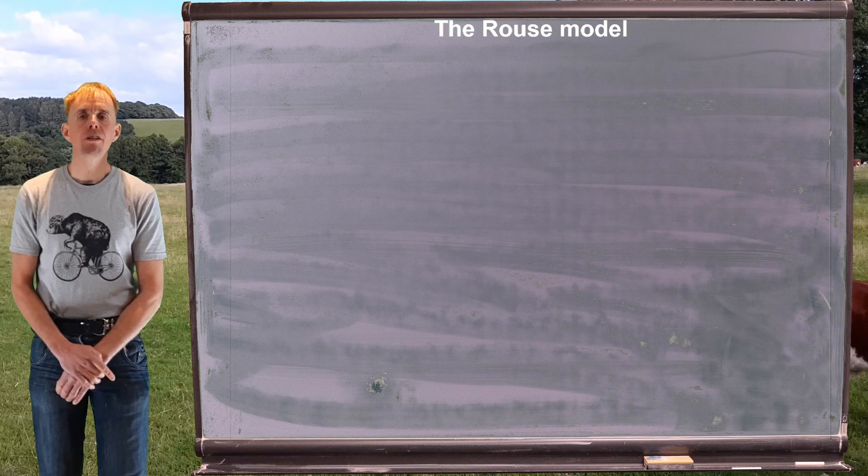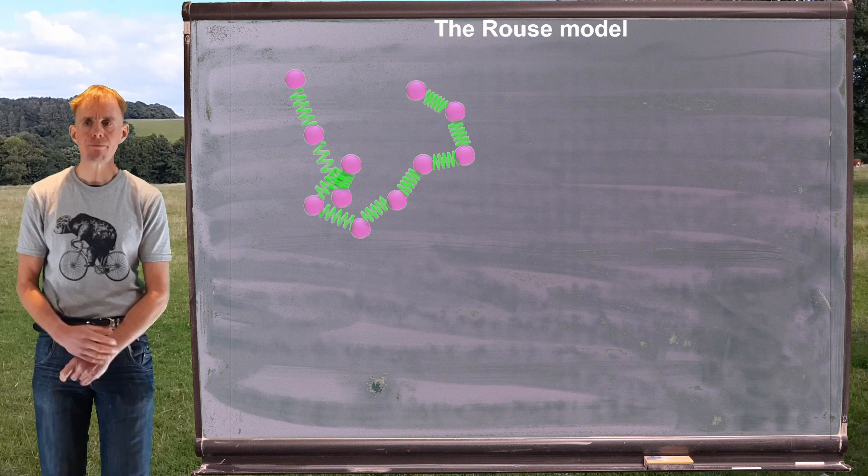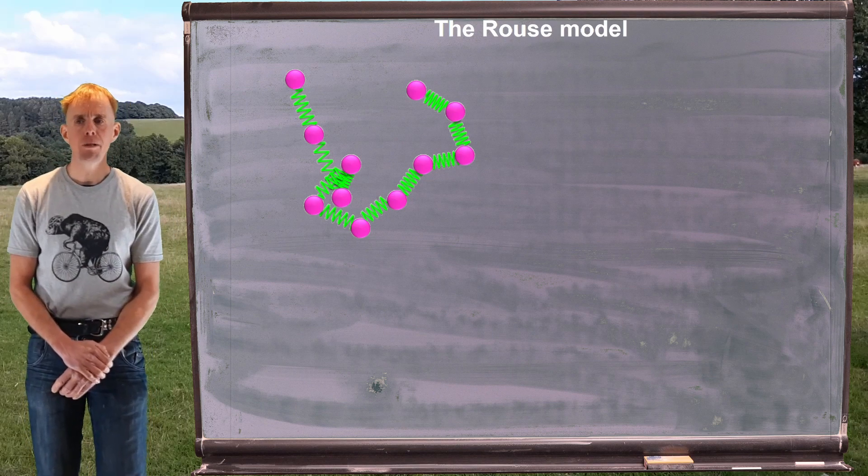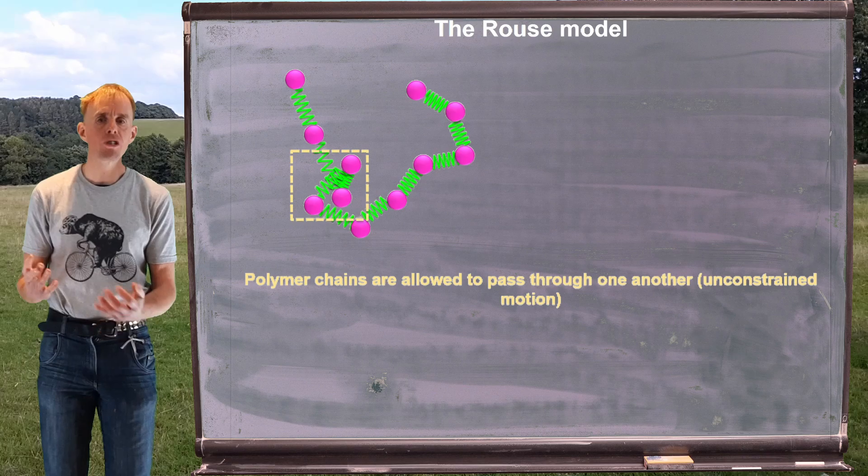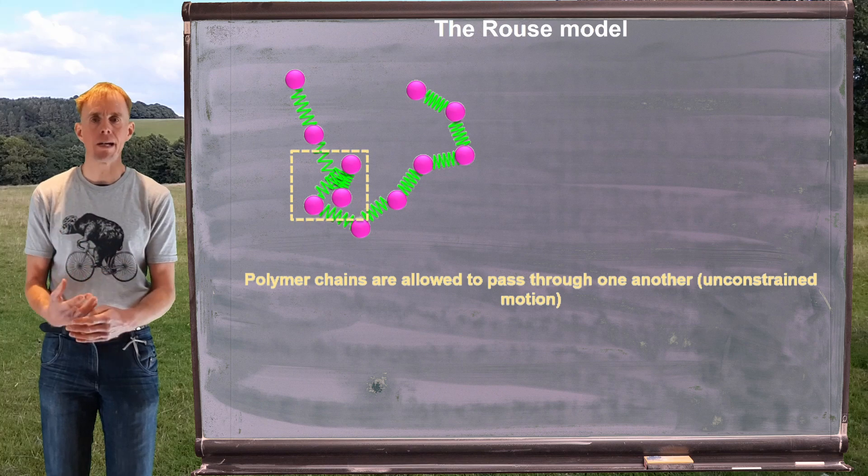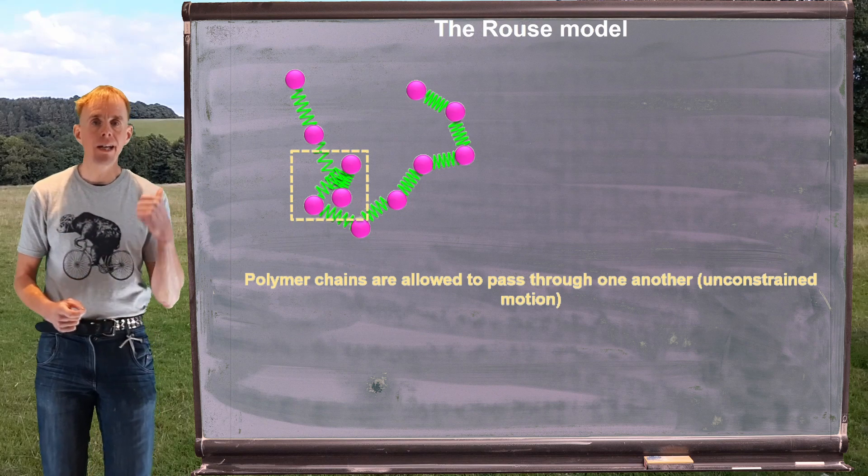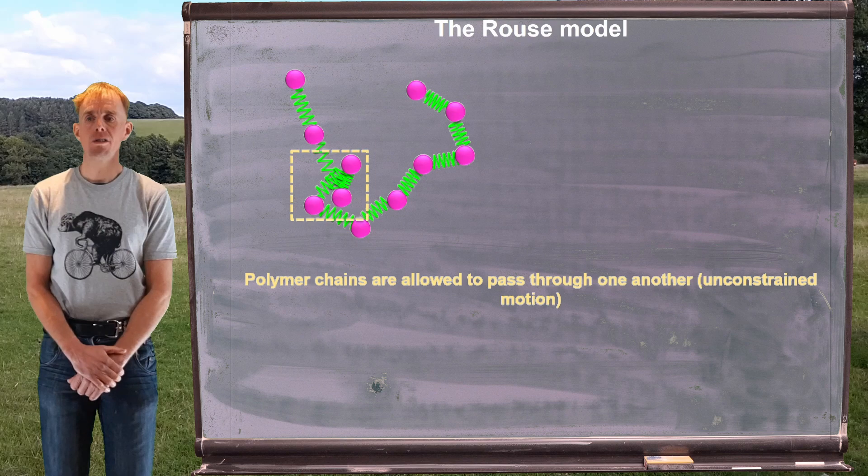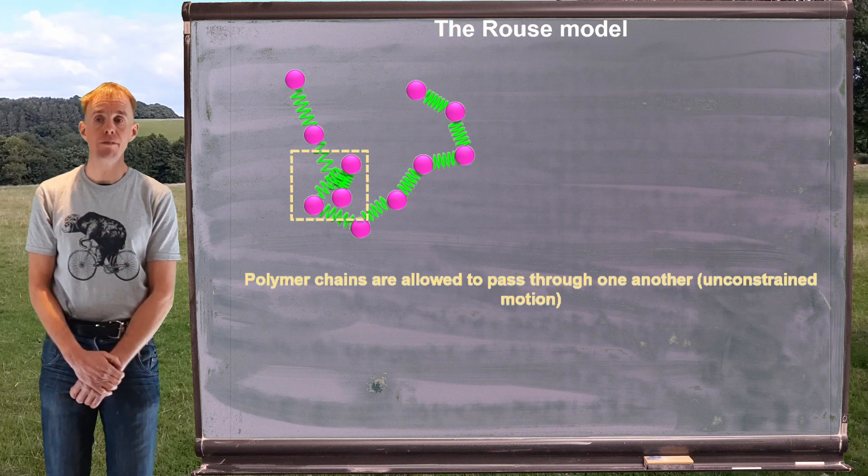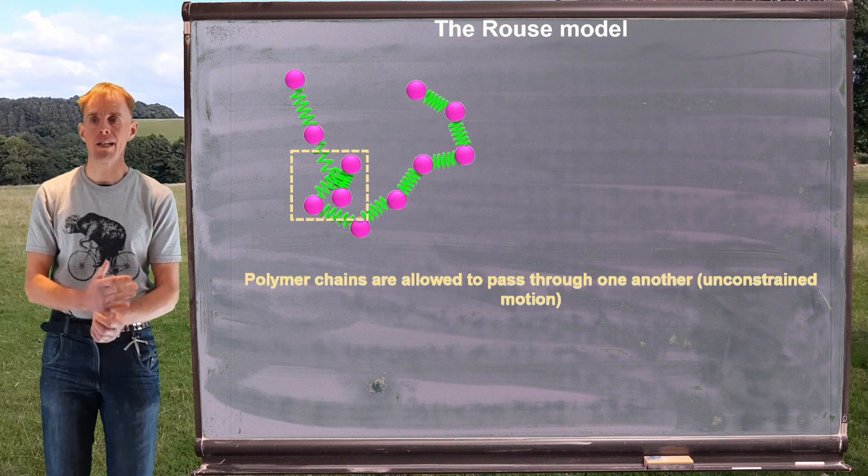So let's have a look at the first model that uses Gaussian chains, and this model is called the Rouse model. Let's examine what physics the Rouse model incorporates. The first piece of physics is one that says that polymer chains are allowed to pass through one another in an unconstrained manner. And this relates back to the concept of a Gaussian chain. Each segment can orient randomly compared to the segments around it. In the dotted box here on the board, you can see that I've got one polymer segment coming into it, and it coils round in a fairly random way in that box, and one chain is indeed passing through another and it's unconstrained in its motion.